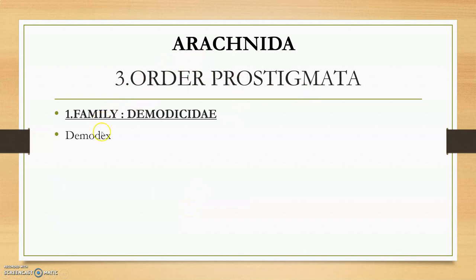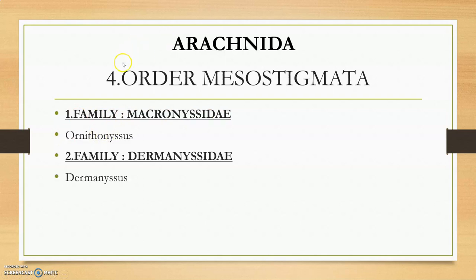The third order is Prostigmata — we only have Demodex, belonging to family Demodicidae. Demodicosis is a very important skin disease in cattle and other animals. The last order in Arachnida is Mesostigmata, comprising gamasid mites. We have only 2 families: Macronyssidae and Dermanyssidae.